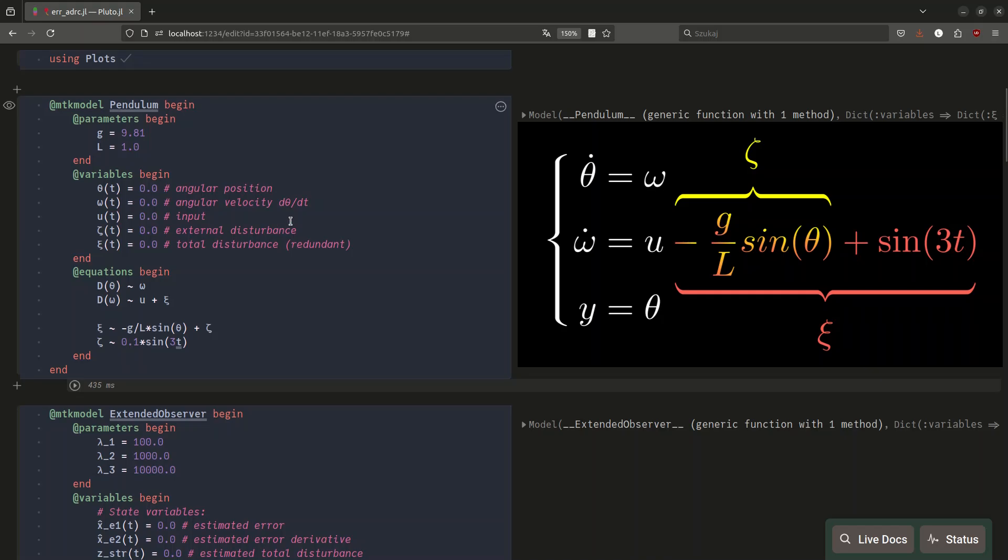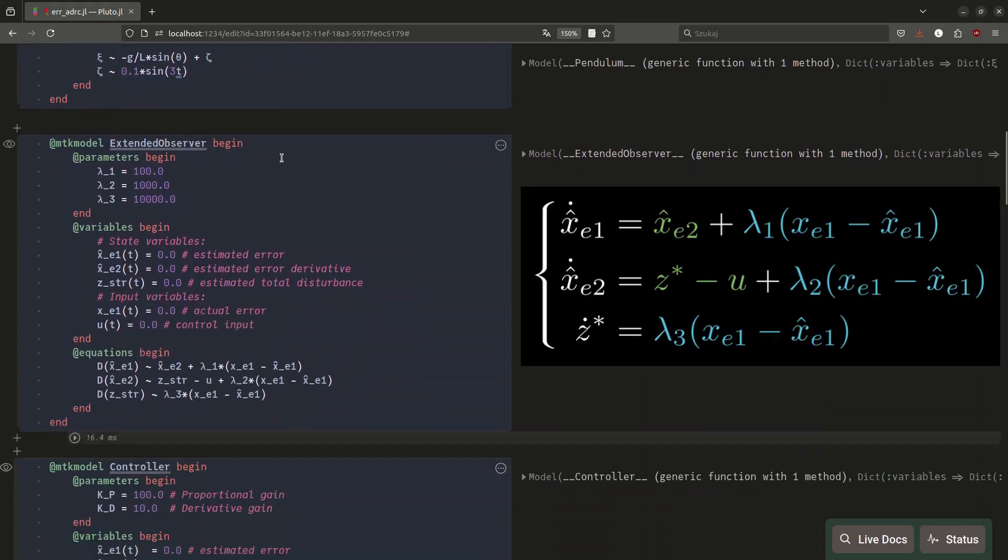Okay, let's see how our error-based ADRC works in the simulation. We have a very similar modeling toolkit setup as before. We have our actuated pendulum, which didn't change. And we have the extended observer, which is still using some arbitrary gains, but now it has the new state variables: xe1 hat, xe2 hat, z star, and it has the new input xe1, which is an actual error, and the, of course, control input. And, as you can see, we have the same equations that we see in the video, with the new correction term and prediction terms updated accordingly.